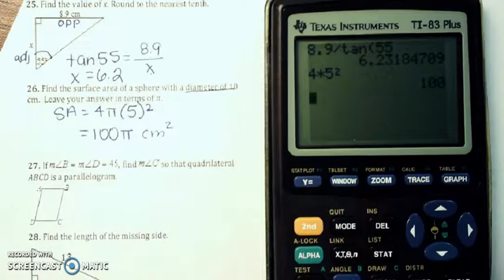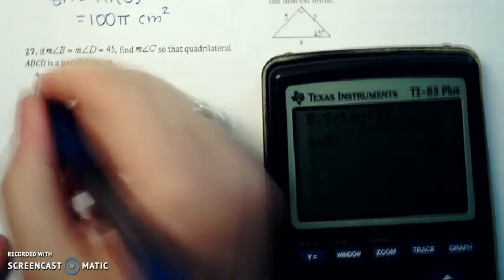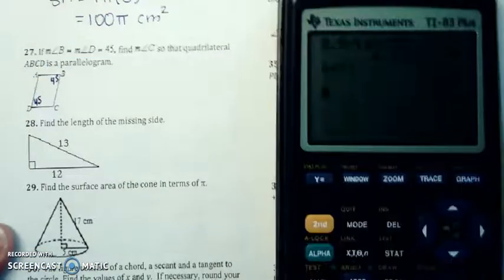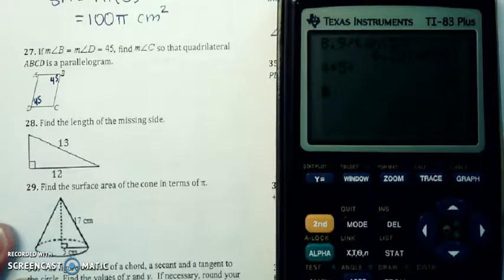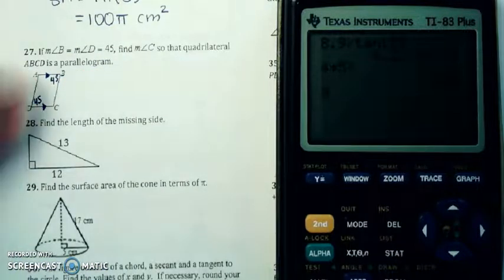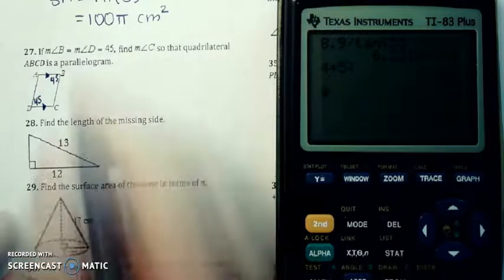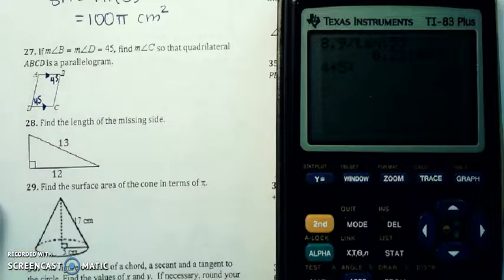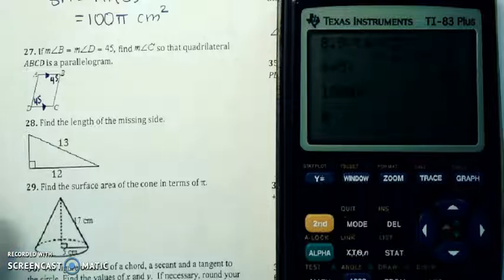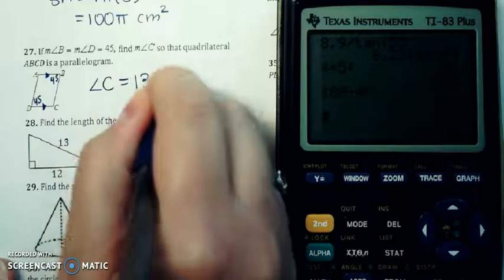For number 27 here, we've got angle B and angle D, opposite angles here, and a parallelogram is what we want this to be. So opposite angles are congruent, and if this were to be a parallelogram, these missing angles A and C, A would be same side interior with D. D and C would be same side interior. So angle A and angle C have to add up with the 45 to be 180. So all you have to do, 180 minus 45, angle C and also angle D will be 135 degrees.